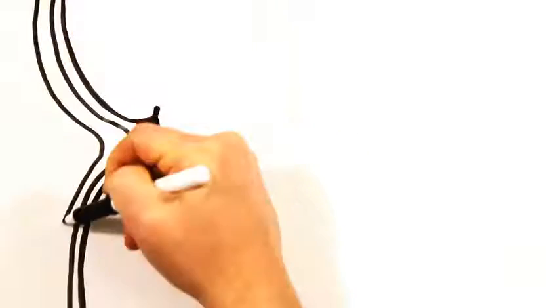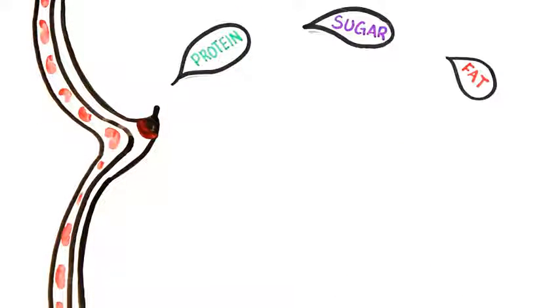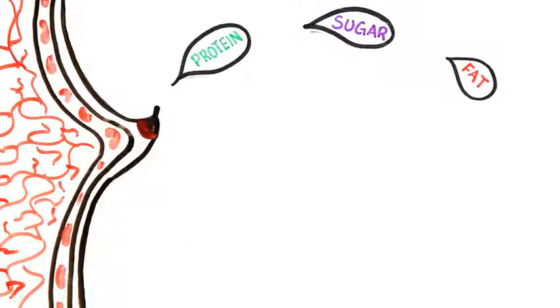Forget water into wine, what about blood into milk? Protein, sugars, and fats are pulled from a mother's blood supply to make milk and it is this action that has made mammals so successful.